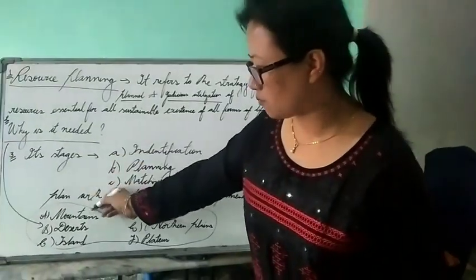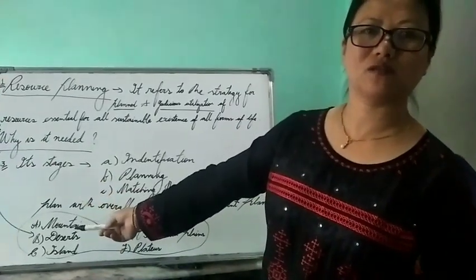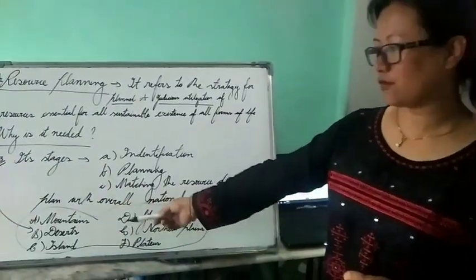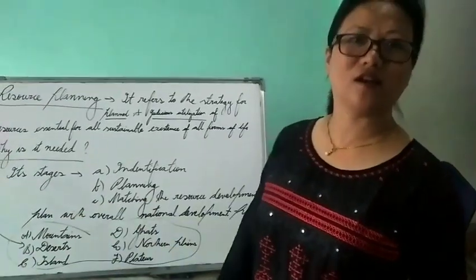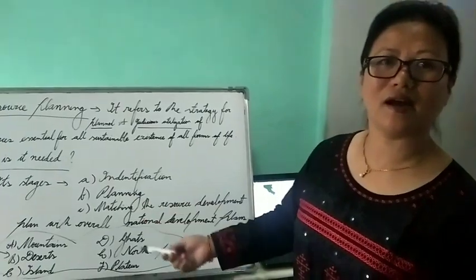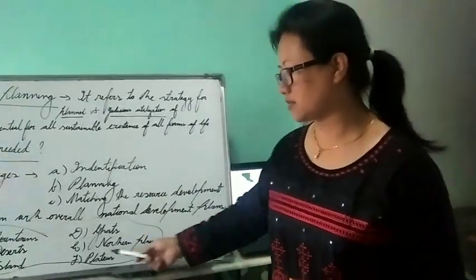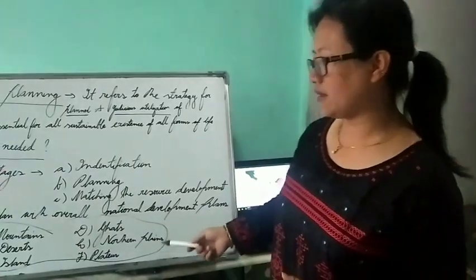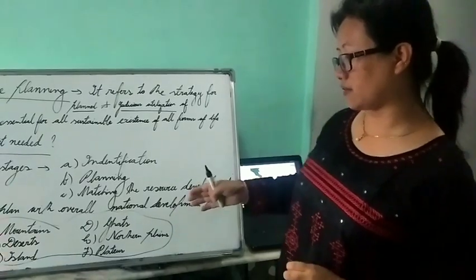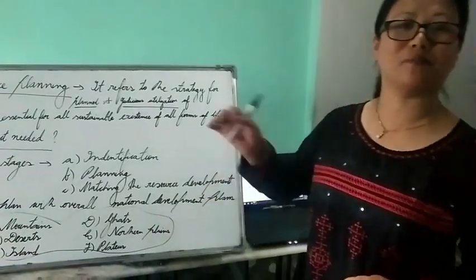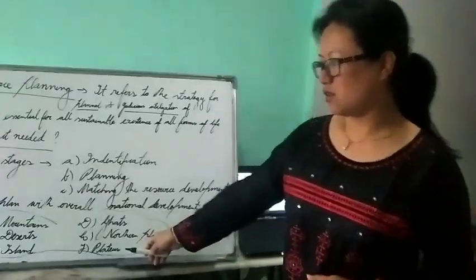Whole India we can divide into six types of physical features. In India we have got mountains, some areas we have deserts like Gujarat and Rajasthan, we have islands like Andaman and Nicobar and Lakshadweep, we have ghats, eastern ghats and western ghats, and we have northern plains which is the most rich area. We have Punjab, Haryana, Uttar Pradesh, they have got alluvial soil which is the best fertile soil for cultivation and farming.